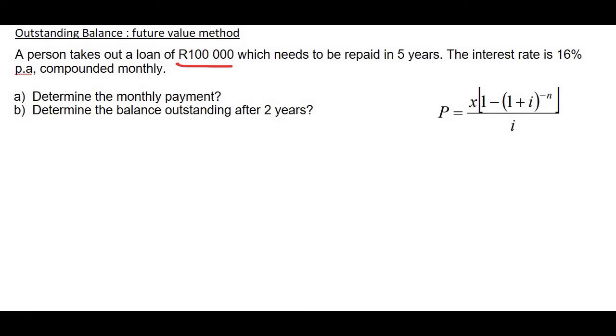So the present value that you have is 100,000 Rand. We don't know what the monthly payment is. That's what we're trying to calculate. And then the interest rate is 16%, compounded monthly. And the number of payments is just going to be a normal 5 times 12, which is 60.